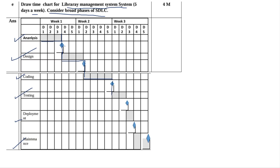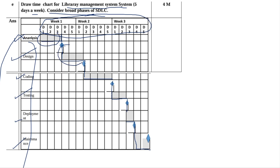Testing must be completed by week 3 day 5. Then in week 3, deployment will be completed and maintenance will also be completed in week 3. To draw the timeline chart, you need to write activities, add time slots, and draw bars. This is how you answer an exam question on the timeline chart for 4 marks.